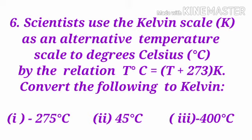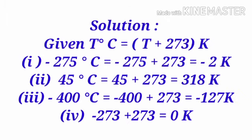Scientists use the Kelvin scale by the relation: T degrees Celsius equals T plus 273 Kelvin. Convert the following: minus 275 plus 273 gives minus 2 K; 45 plus 273 gives 318 K; minus 400 plus 273 gives minus 127 K; and minus 273 plus 273 gives 0 K.